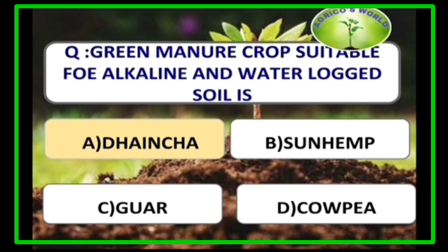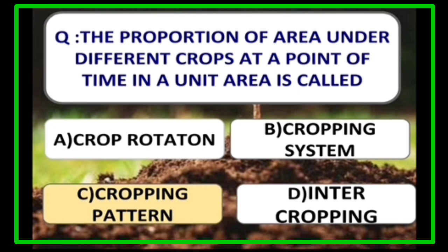The green manure crop suitable for alkaline and waterlogged soils is Daincha. Daincha is mostly used in paddy-based cropping systems as a green manure crop. The proportion of area under different crops at a point of time in a unit area is called cropping pattern.